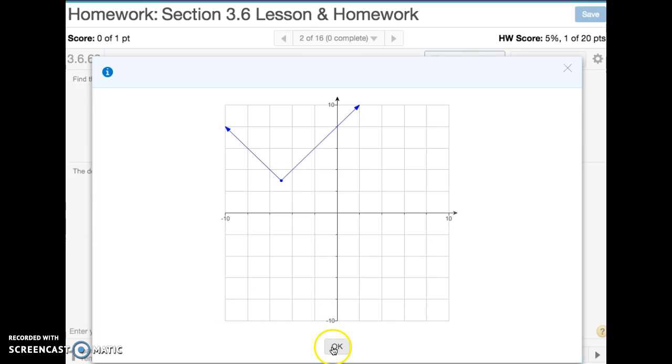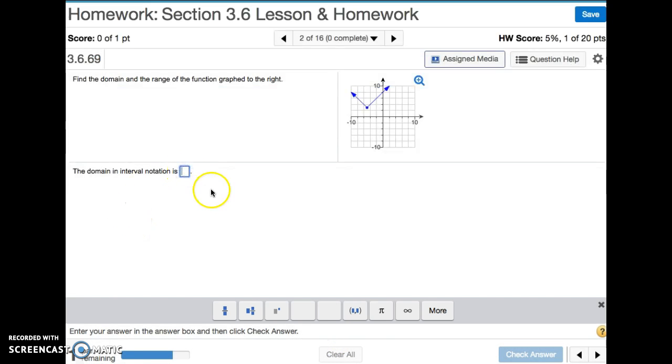Now if we put that in interval notation, we always use parentheses around infinities, and the graph goes from the far left of negative infinity to the far right of positive infinity. Let me just move that, making sure that I enter infinity in the correct place and check my answer.